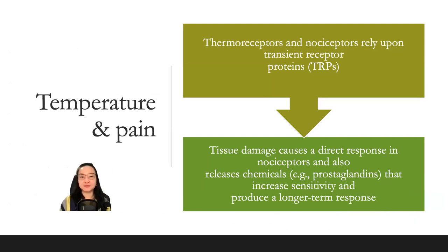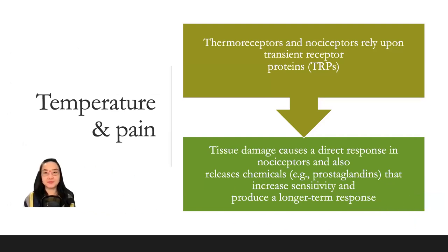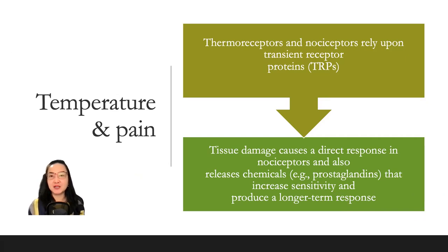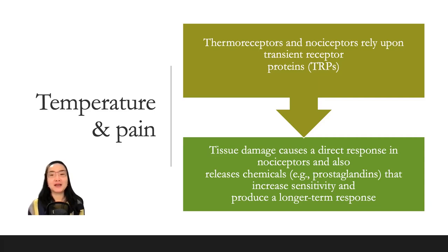Temperature and pain. Thermoreceptors and nociceptors rely upon transient receptor proteins (TRPs). Tissue damage causes a direct response in nociceptors and also releases chemicals — for example, prostaglandins — that increase sensitivity and produce a longer-term effect.